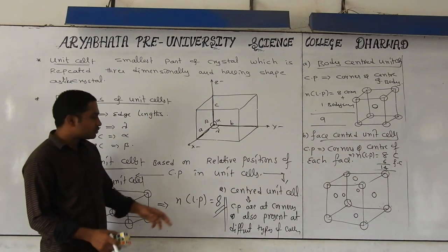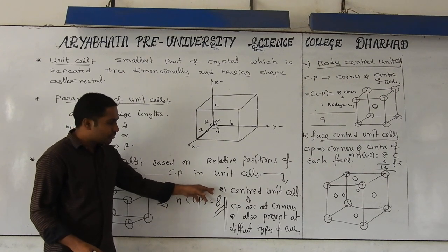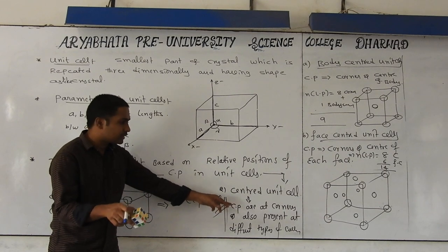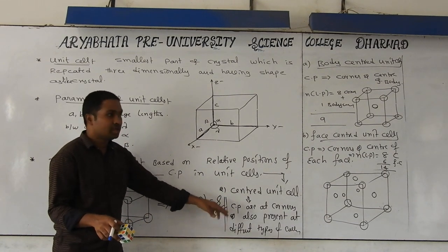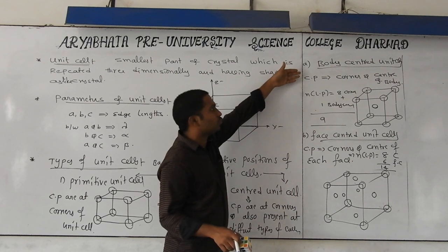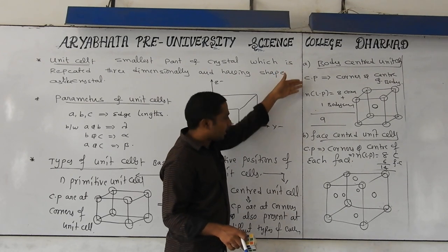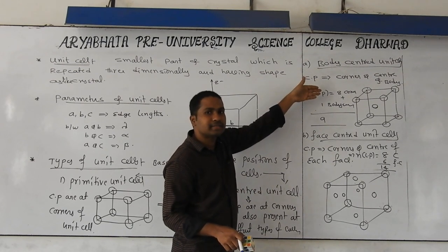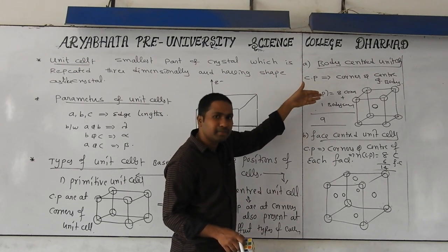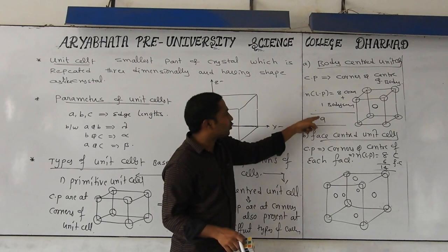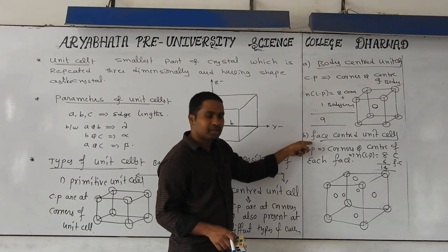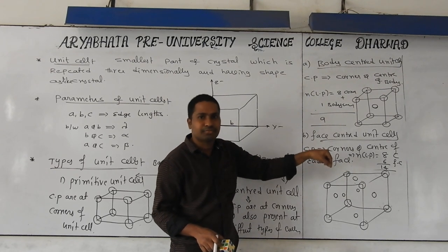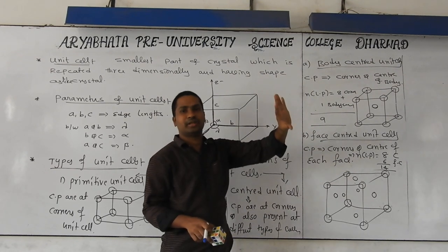The centered unit cell is a unit cell in which constituent particles occupy corners and also are present at different types of centers. Based on centers, we classify them into three categories: body center, face center. Body center means constituent particle is at corner and also at the center of the body — together lattice points is nine. If you take face center, constituent particles are at corners and also at the center of each face — we get fourteen lattice points.